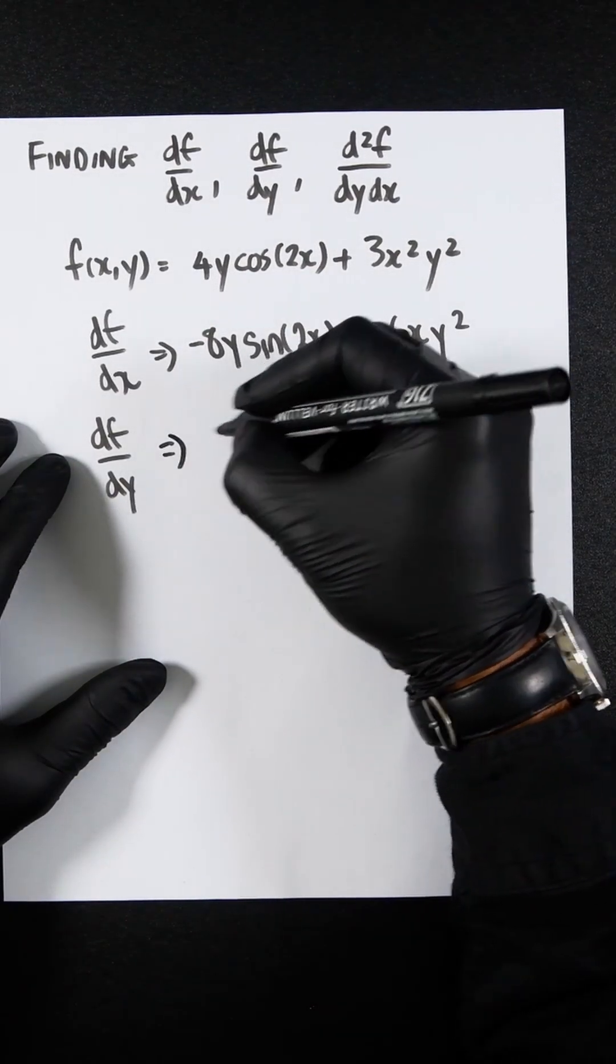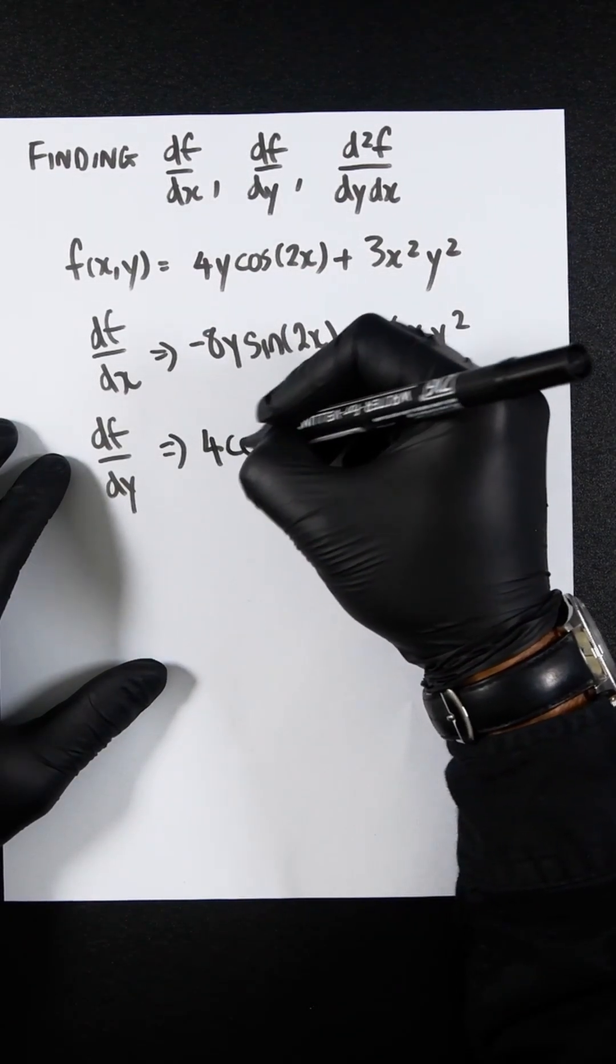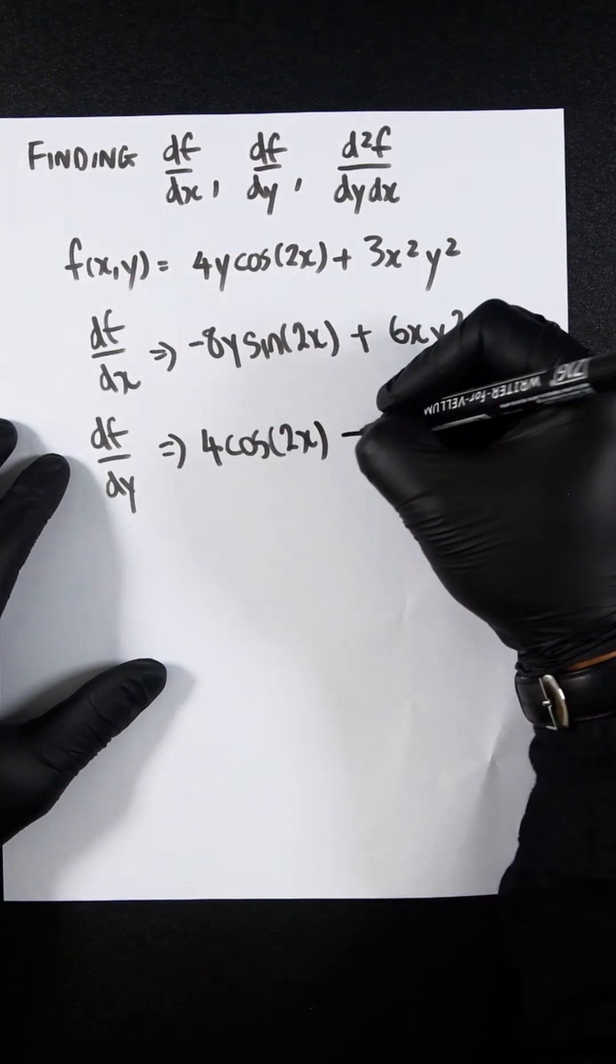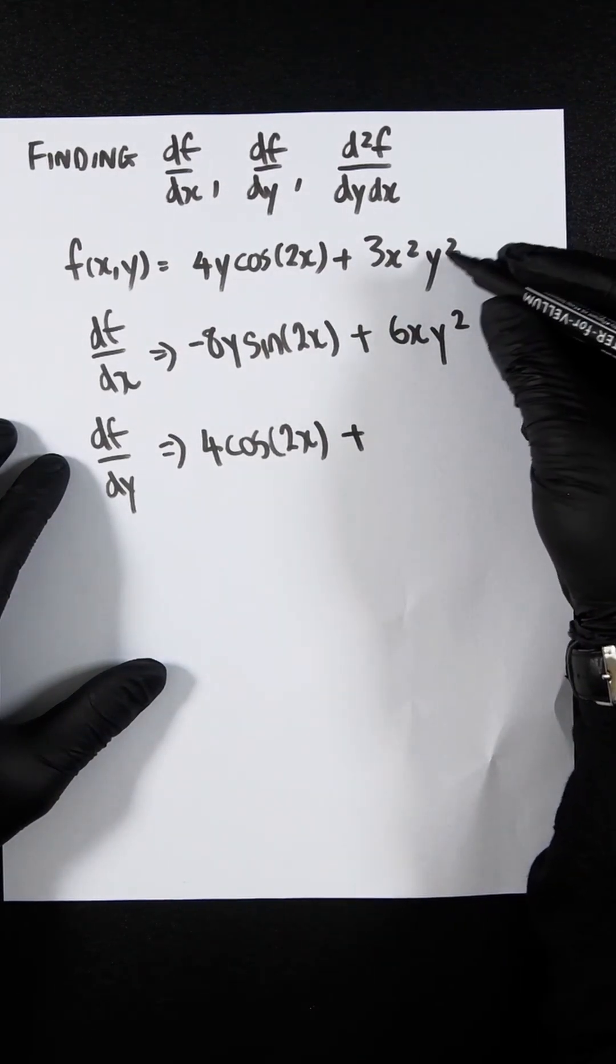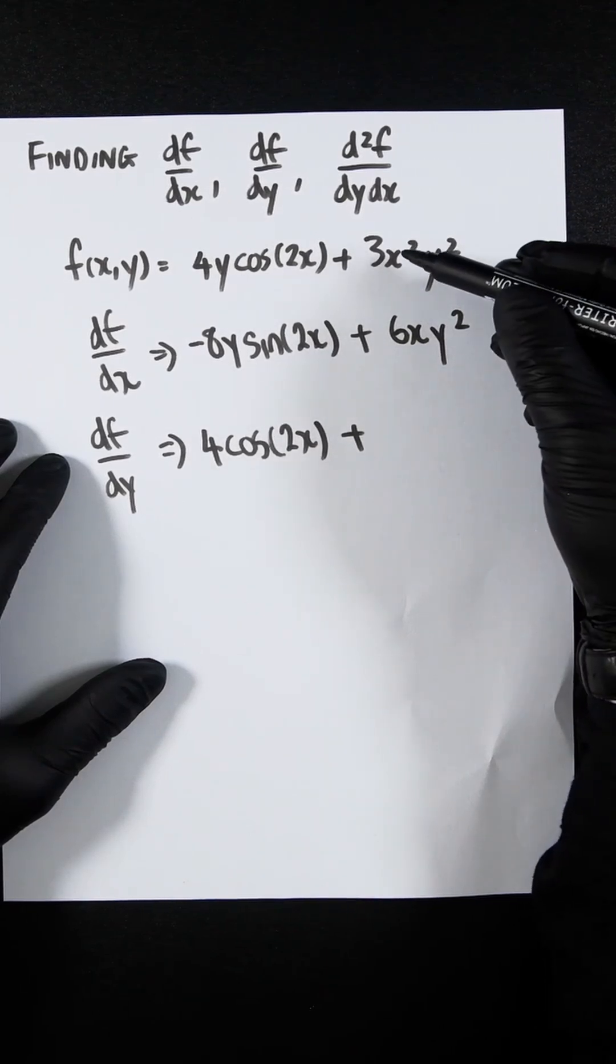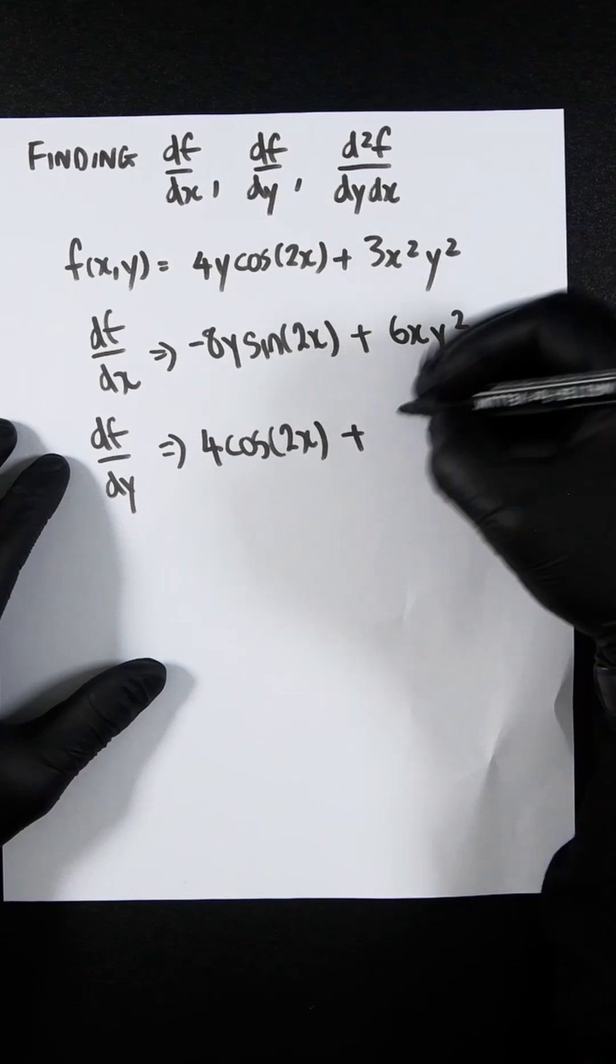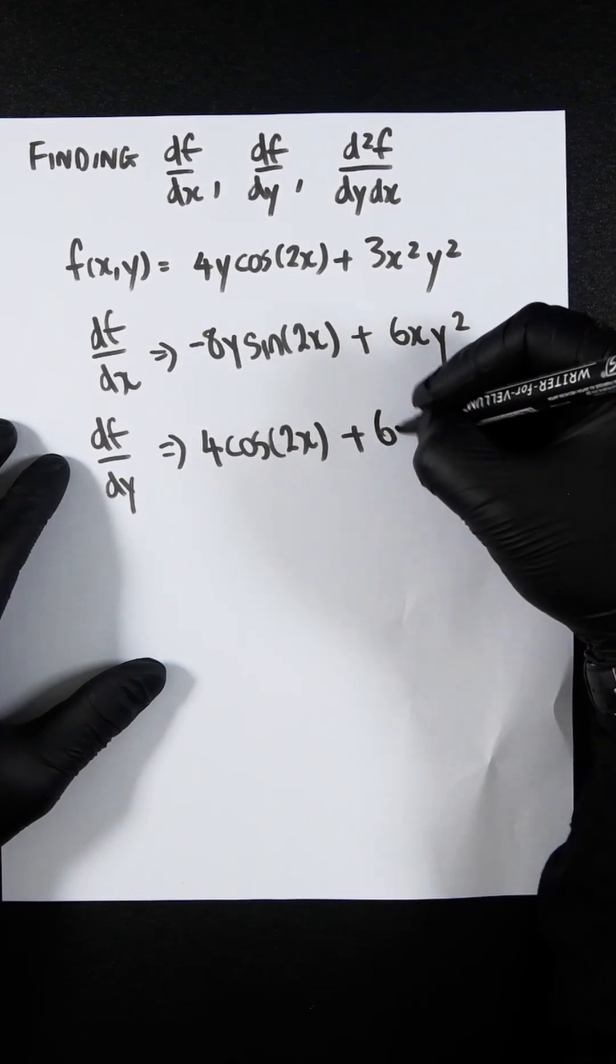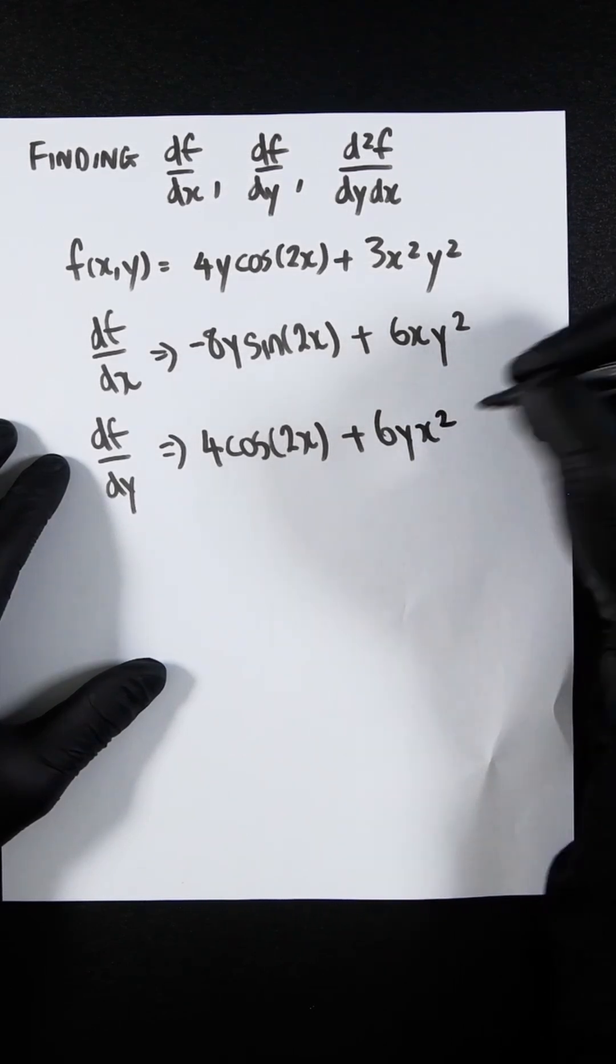So that would be 4 cos 2x plus this differentiated y² would be 2y. So then 2y times 3x² would be 6yx².